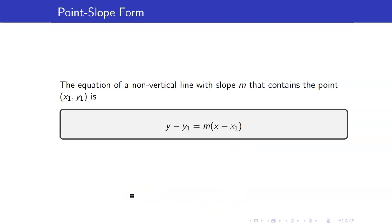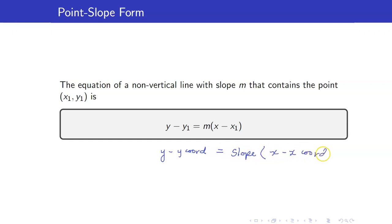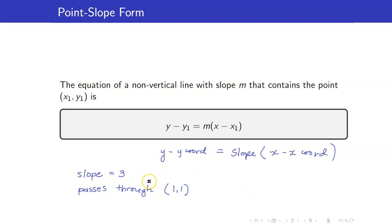Let us now discuss the point-slope form of a line. The equation of a non-vertical line with slope m that contains the point (x1, y1) is given by y minus y1 equals m times x minus x1. Suppose that your slope is 3 and it passes through the point (1, 1). The equation is y minus 1 equals 3 times x minus 1.